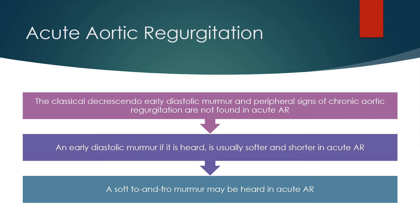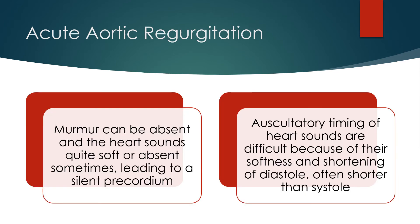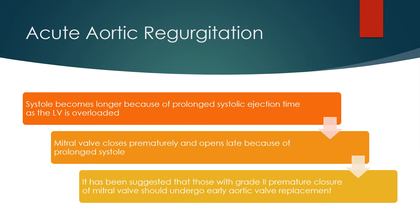The classical decrescendo early diastolic murmur and peripheral signs of chronic aortic regurgitation are not found in acute AR. An early diastolic murmur, if heard, is usually softer and shorter. A soft to-and-fro murmur may be heard, and the murmur can be absent with heart sounds quite soft or absent, leading to a silent praecordium. Accurate timing of heart sounds is difficult due to their softness and shortening of diastole, often shorter than systole. Systole becomes longer because of prolonged systolic ejection time as the left ventricle is overloaded, and the mitral valve closes prematurely and opens late.